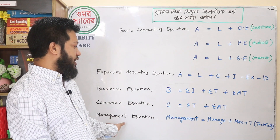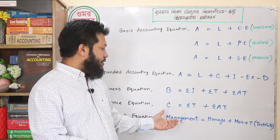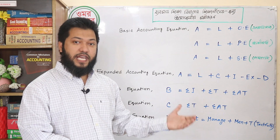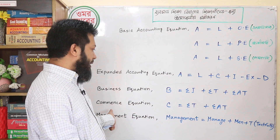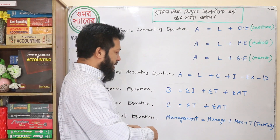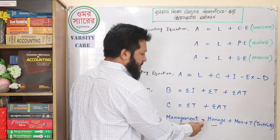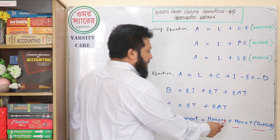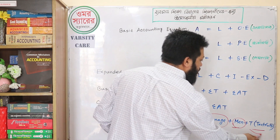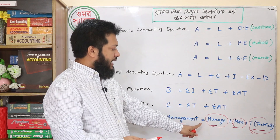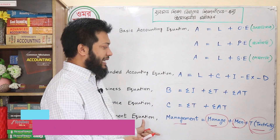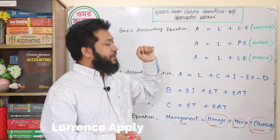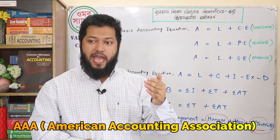Last one: management equation. Management equals Manage plus Man plus T. T means tactfully. Manage means to govern, Man means human, and T means tactfully. So management means governing human beings tactfully. The management equation is given by Lawrence Apley, and the accounting equation is given by the American Accounting Association.